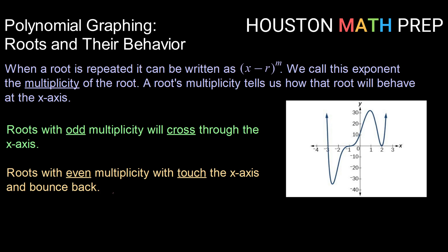When a root is repeated, it can be written as (x - r)^m, where r is the root raised to the m power. We call this exponent, this m value, the multiplicity of a root. A root's multiplicity tells us how the root will behave when it gets to the x-axis.